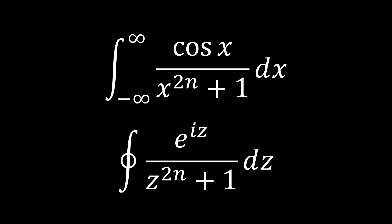Hello guys, welcome to another calculus video. Today we're going to be taking a look at this absolute monster of an integral because it's a generalized form of an already difficult integral. It's the integral from negative infinity to infinity of cosine of x over x to the 2n plus 1. We already know that in the case of n equals 1, the integral equals pi over e. This has been shown on Flammable Maths and Maths 505 and lots of channels, but today I want to tackle a more general form where we can plug in any n greater than or equal to 1 and figure out the value of this integral.